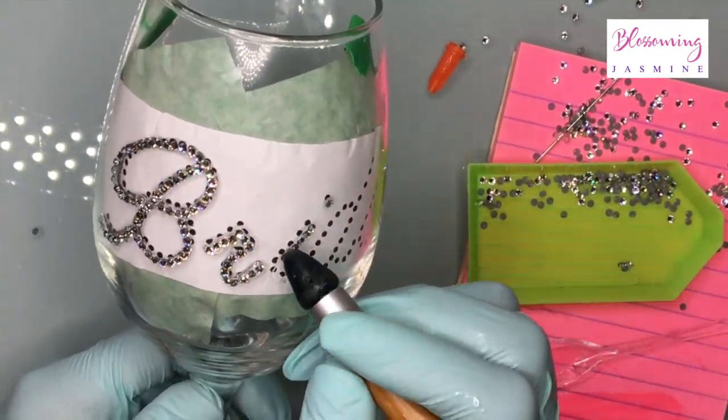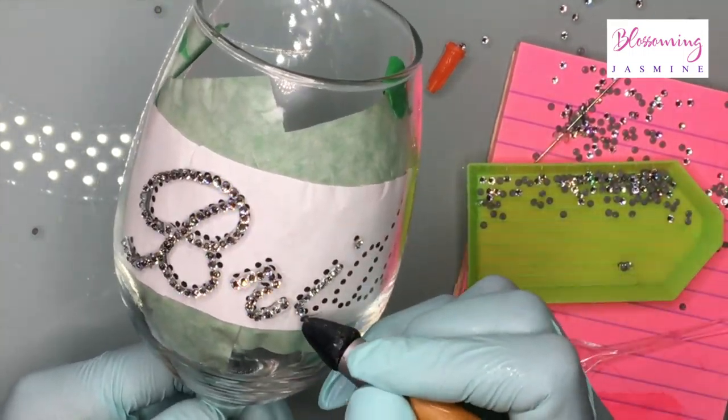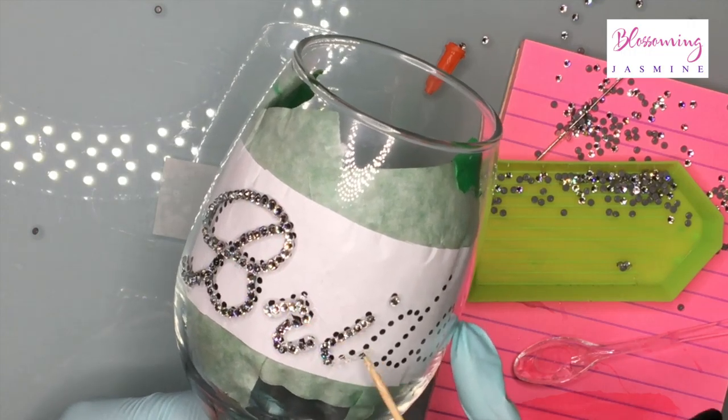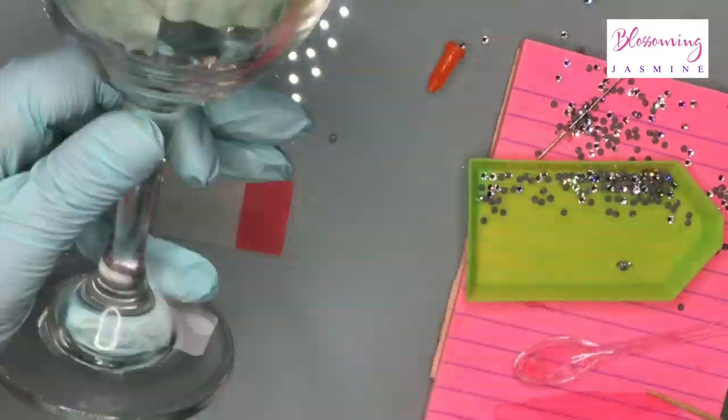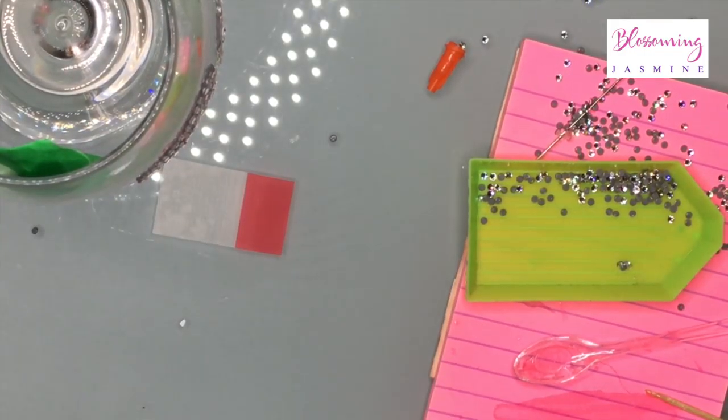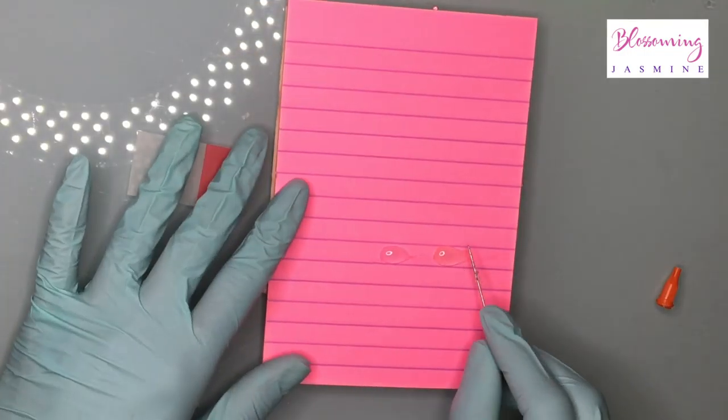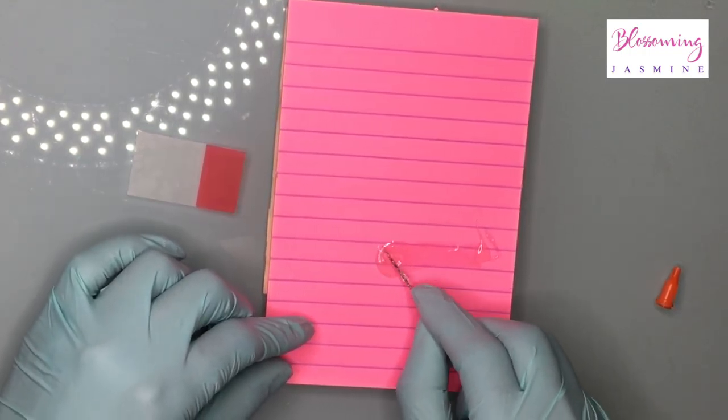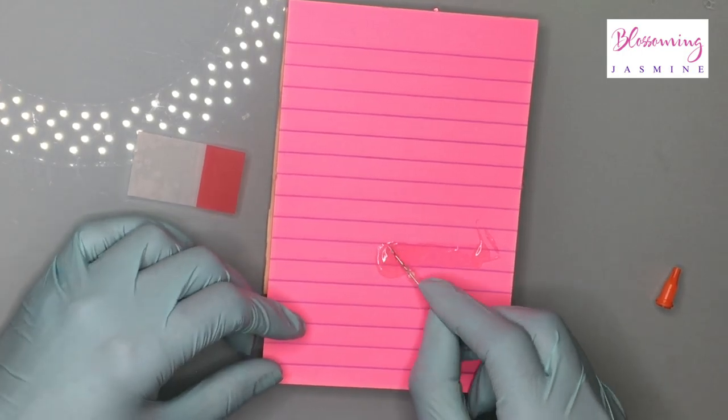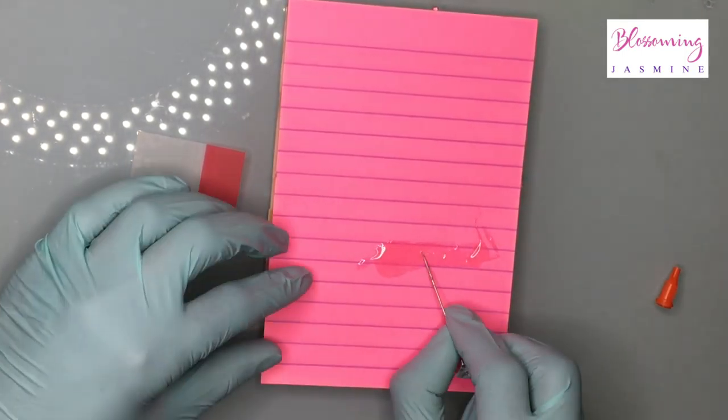If you don't want to use this glue, then you don't have to. You can use E6000. Just know that the longevity of the stones on the glass will not be as great as a two-part epoxy glue, which is another reason why you have to be very careful about who you commission or who you really trust to make bedazzled items for you.